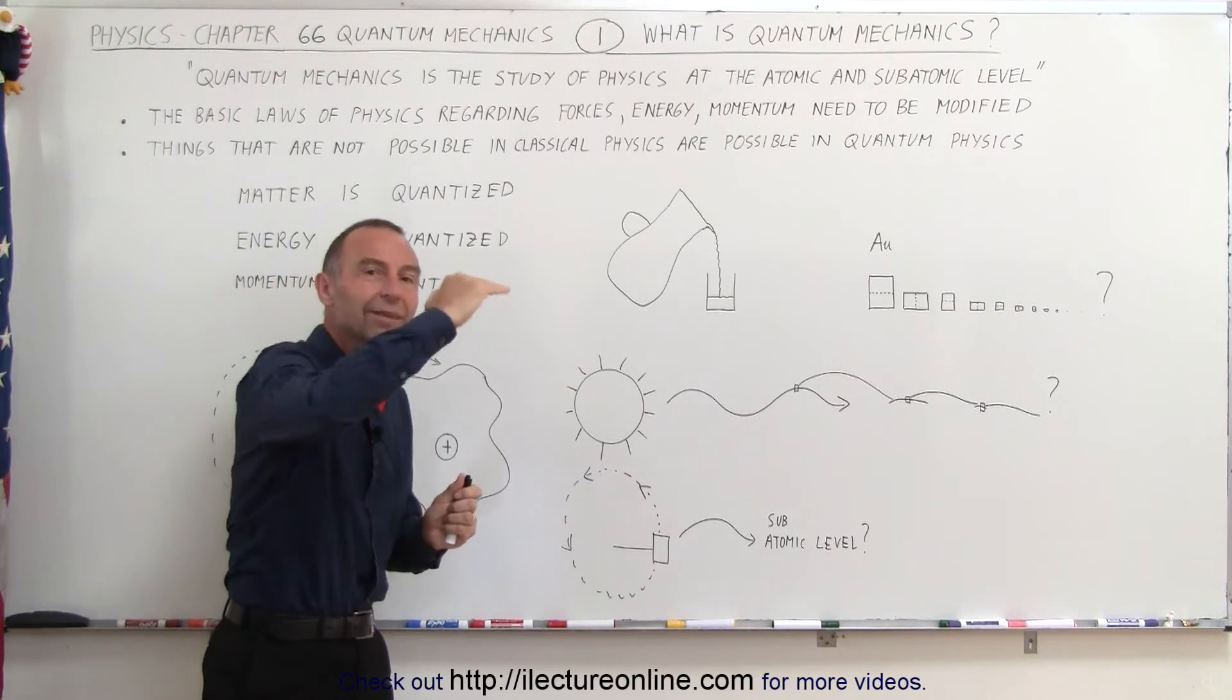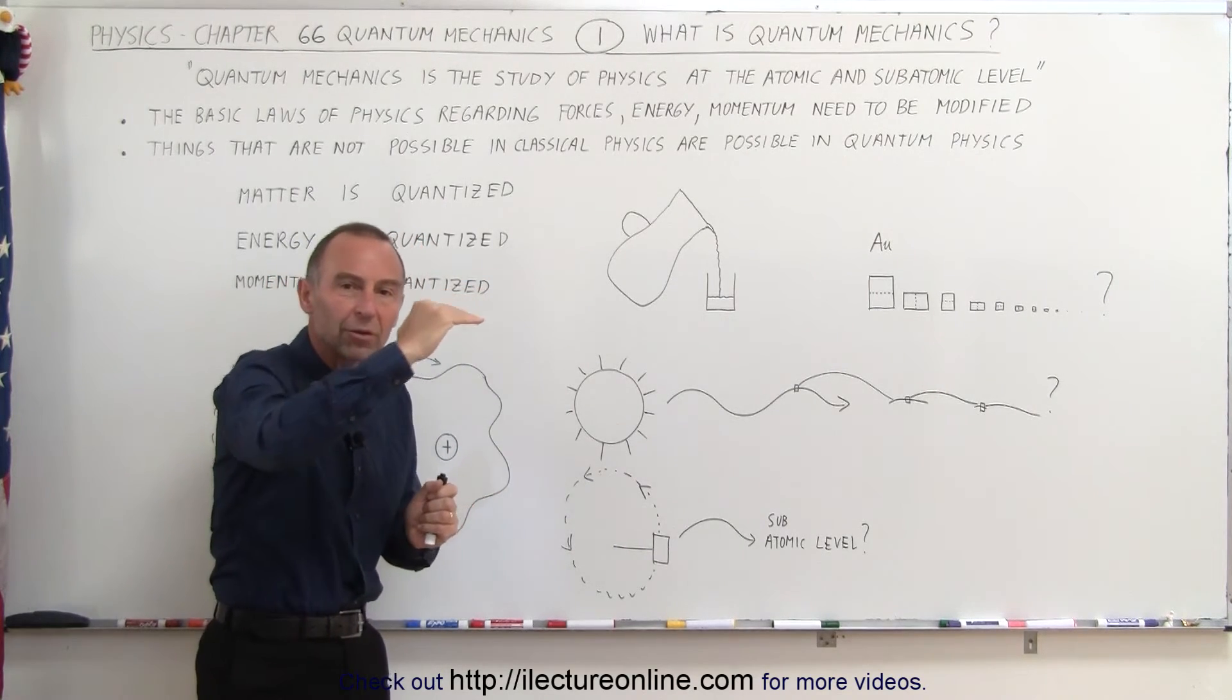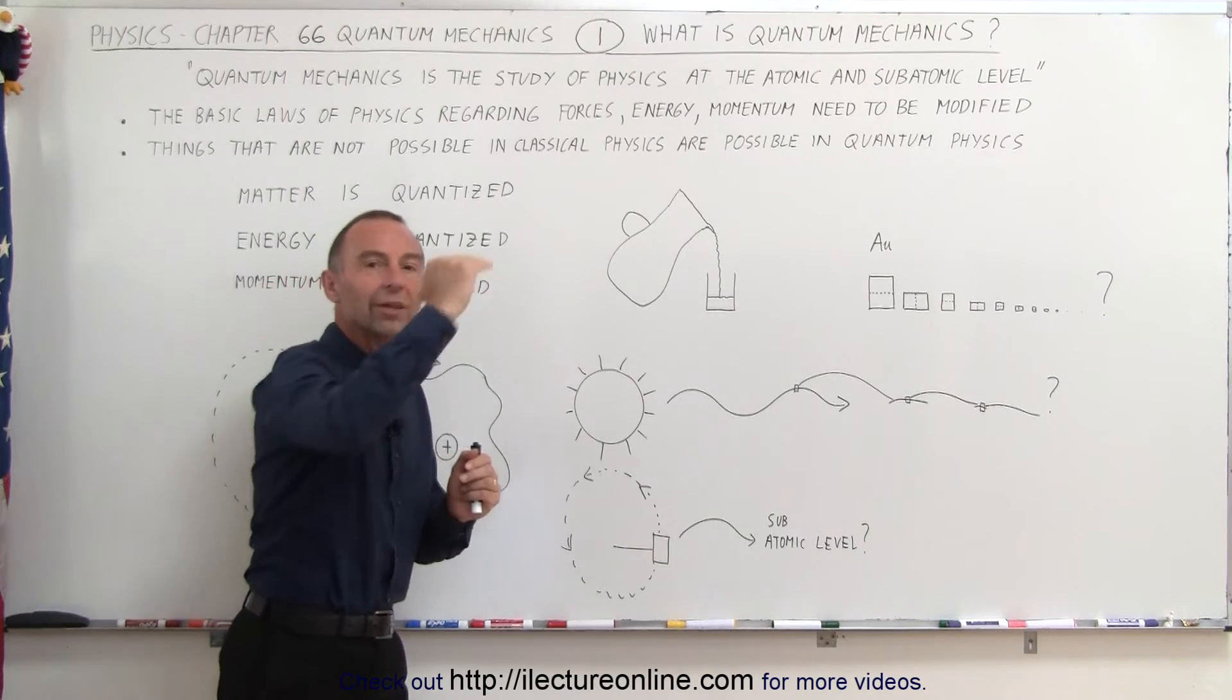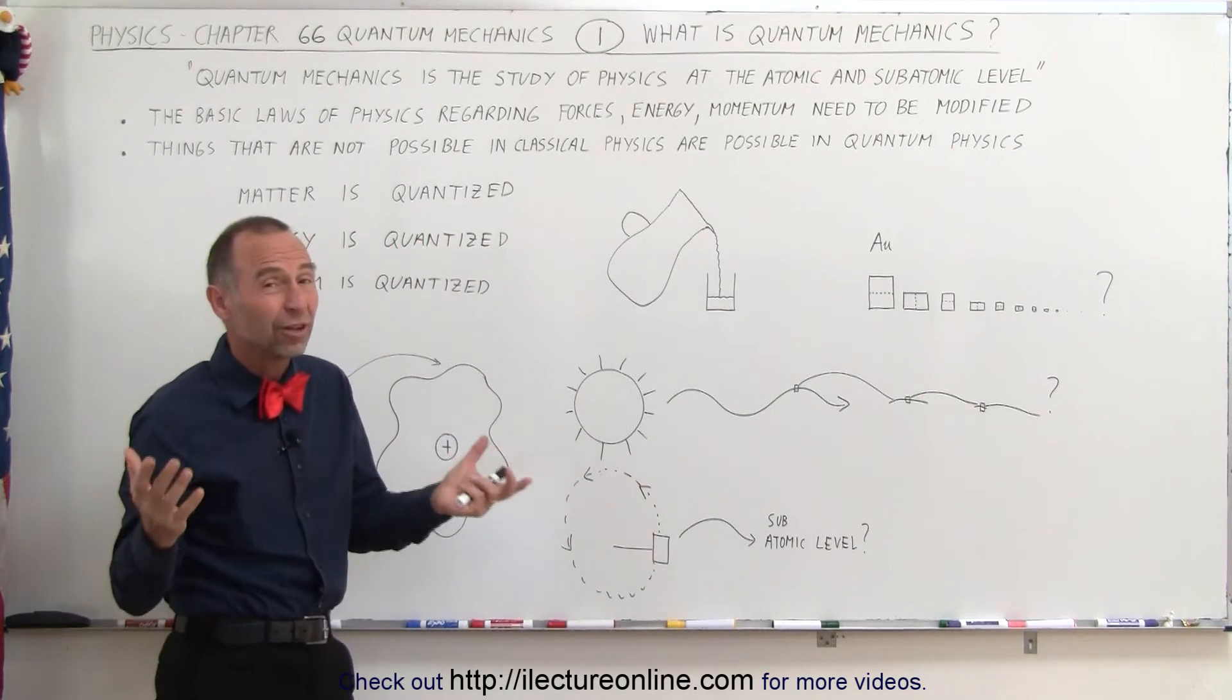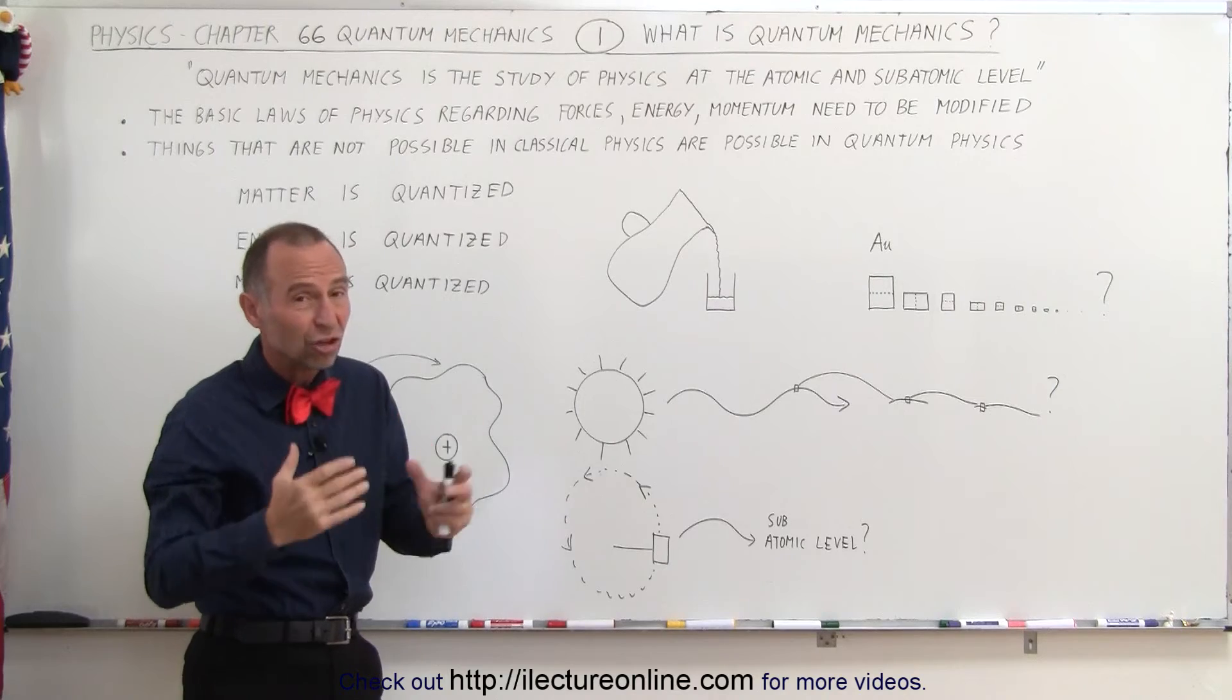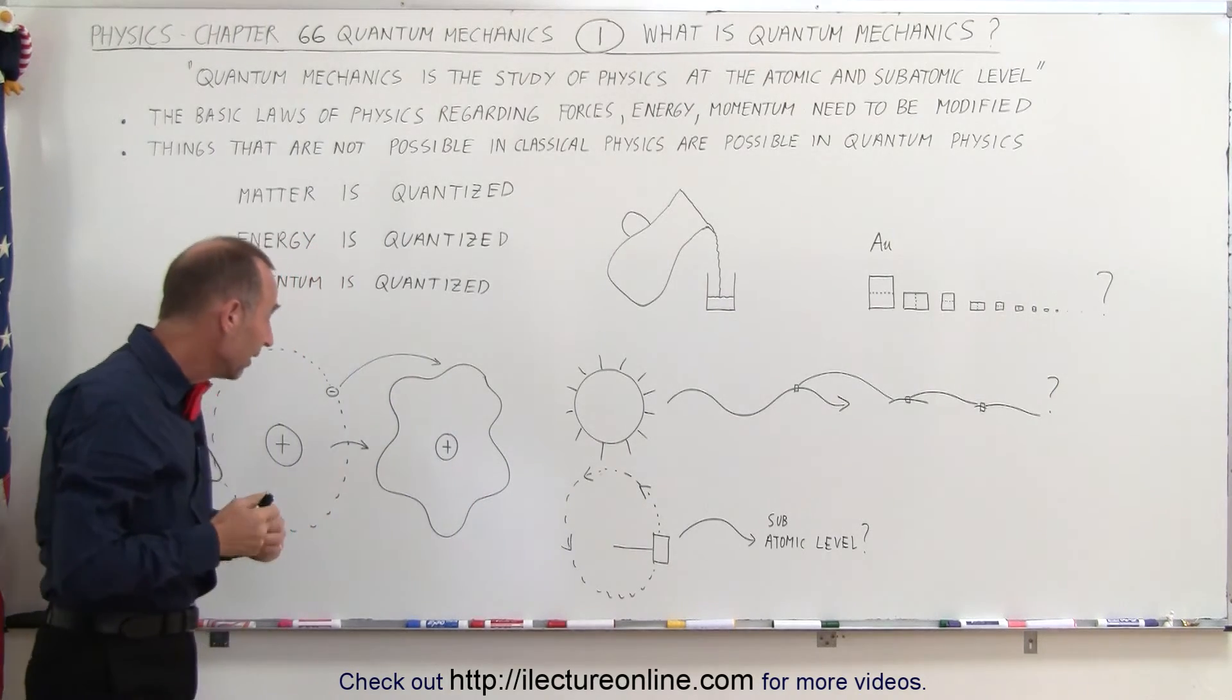You can be in different momentum quantized states, but you can't go from one to the other smoothly. It's in quantum jumps. So, again, when we study physics at that level, things change and we need to adapt to it.